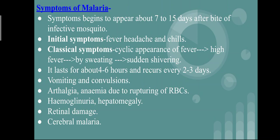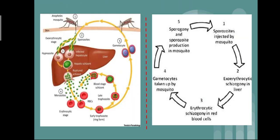There are also additional symptoms observed in patients: vomiting and convulsions, arthralgia (joint pains), anemia due to rupturing of RBCs, hemoglobinuria, and hepatomegaly (liver enlargement). There is also damage to the retina of the eye. If the infection spreads to the brain, it is known as cerebral malaria.